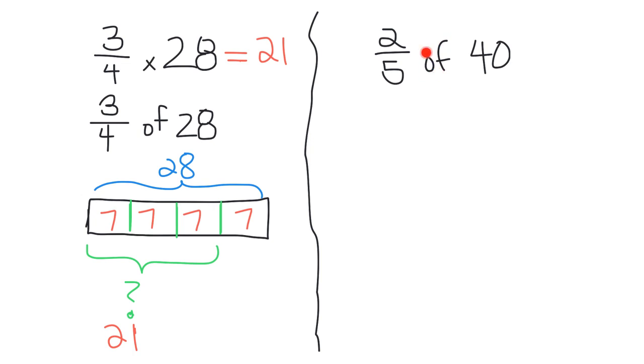So let's see, this 'of' means we're really doing 2/5 times 40. All right, so we're going to represent that 40. So here's our 40.